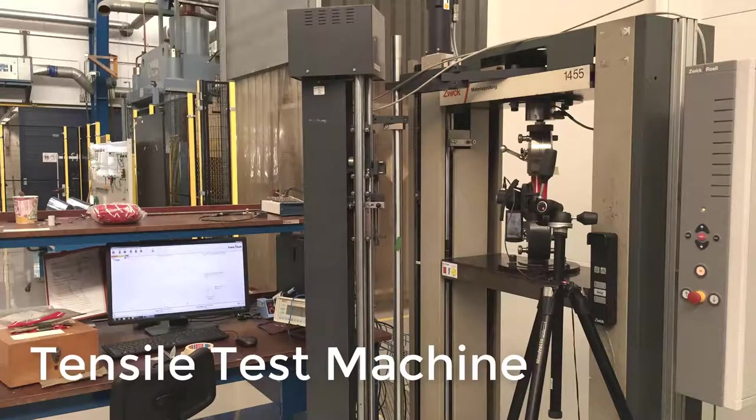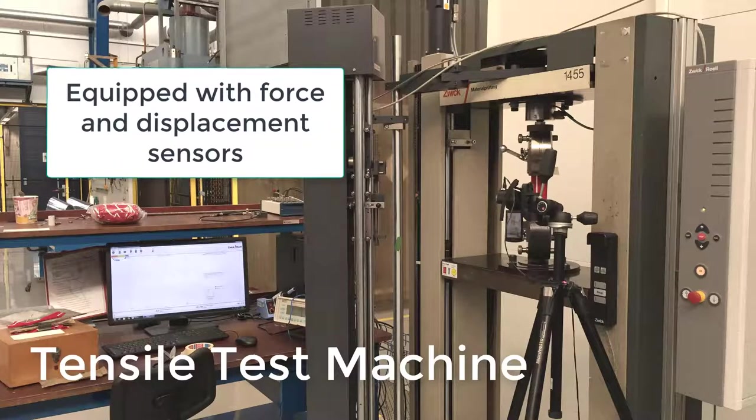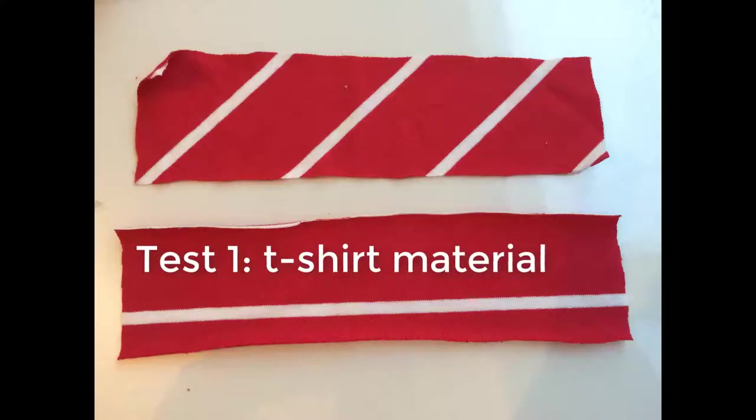For this test, we will use the tensile test machine shown here. This machine has sensors in it that can measure both the force and displacement as we run the tests. First, we will test the t-shirt material.